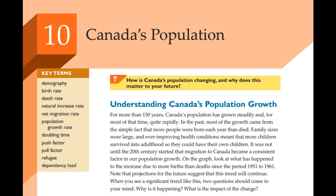How does the dependency load actually impact people and their decisions? When you're aware of these demographic trends, it can help you make informed choices. For example, understanding that the population is aging means there's a growing need for health care workers — nursing, geriatric care, social work could be great career paths. It also highlights retirement planning: as the ratio of working-age people to retirees changes, there might be adjustments to pensions or social security, making it really important to start saving and investing for retirement early.